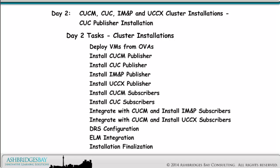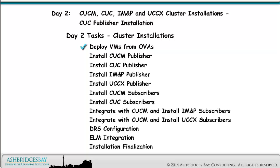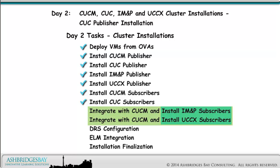On installation day, we install our CUCM, CUC, IM&P, and UCCX clusters. We deploy all VMs from OVAs and attach the installation media. We install our CUCM, CUC, IM&P, and UCCX publishers, then subscribers. We activate the services needed in the CUCM cluster, integrate IM&P and UCCX with CUCM, configure DRS for all four applications, integrate CUCM and CUC with ELM, and do final tasks like upgrading VMware tools and configuring virtual machine startup and shutdown.